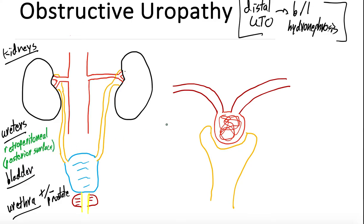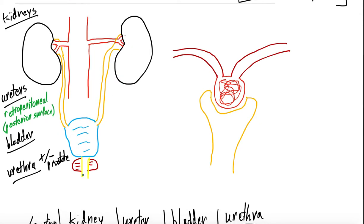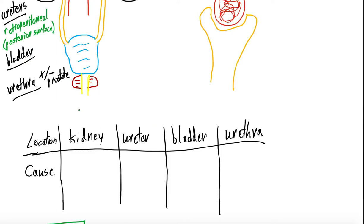How does anatomy relate to our differential diagnosis? An obstruction is a physical ailment — somewhere in the genitourinary system there's an obstruction causing backflow of urine. Thinking anatomically: kidney, ureter, bladder, urethra. Nephrolithiasis — stones in the kidney — are a huge cause of partial urinary tract obstruction. A stone can travel from the kidney into the ureter and often gets lodged at the ureterovesical junction, causing backflow of urine and unilateral hydronephrosis.